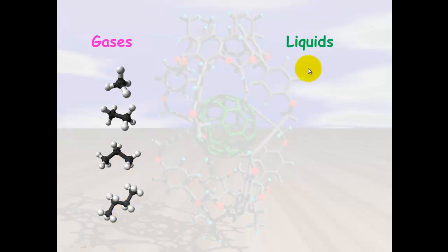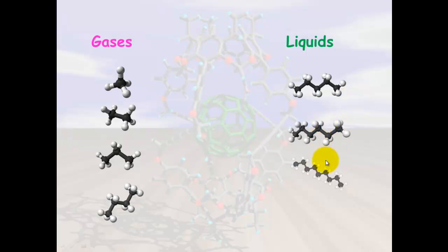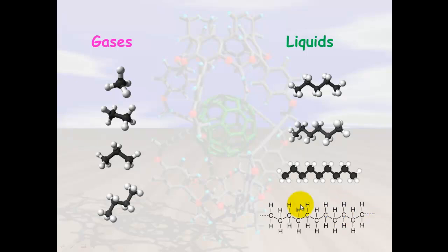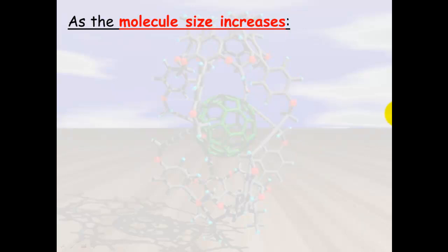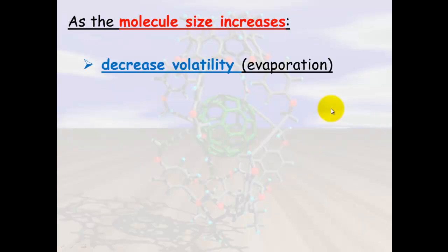Any alkane that has five or more carbons will be a liquid at room temperature. Anything from pentane upwards, such as hexane or nonane, or pretty much any hydrocarbon with more than five carbons, will be a liquid at room temperature, because there are more atoms and so there are more dispersion forces.